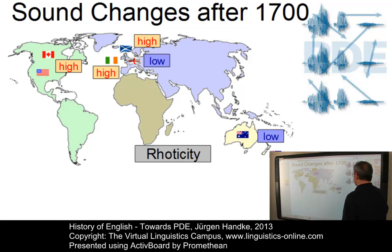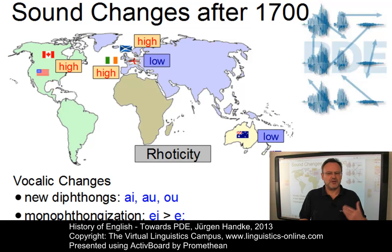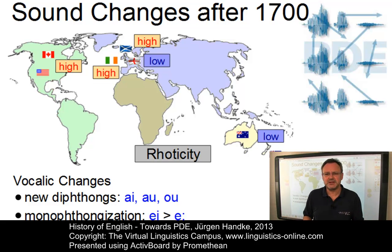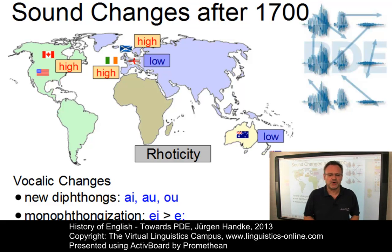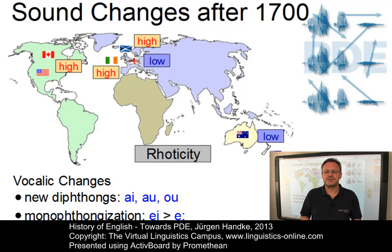In the vocalic system, the central changes affected the diphthongs. They were either smoothed to monophthongs — for example, A became E in some varieties — or new diphthongs entered the system, such as I, O, etc., in some varieties.